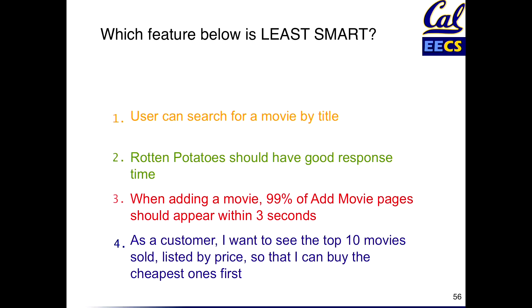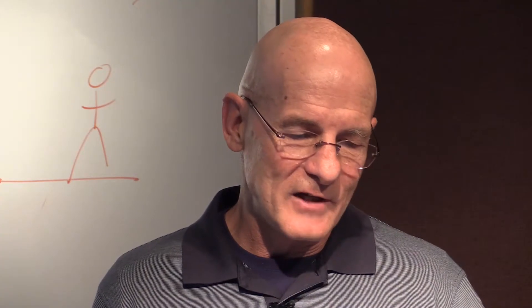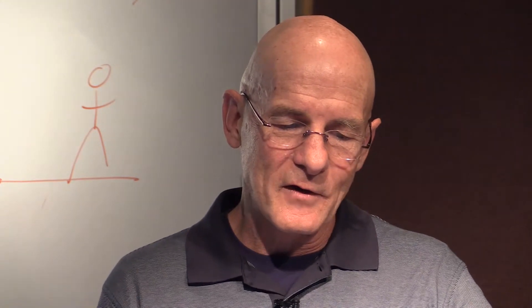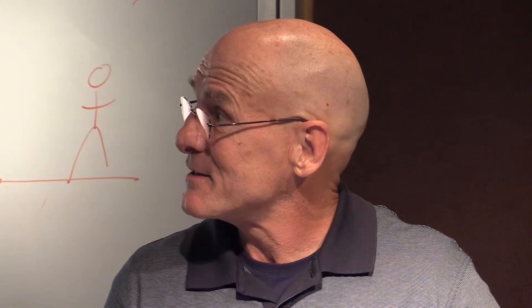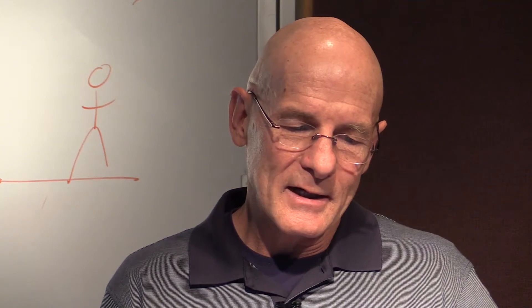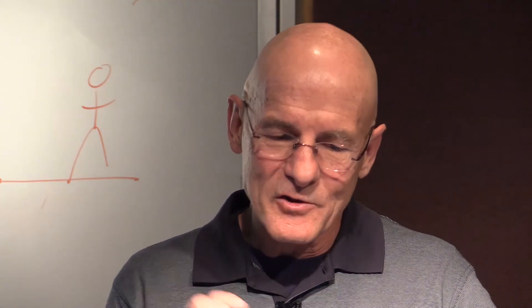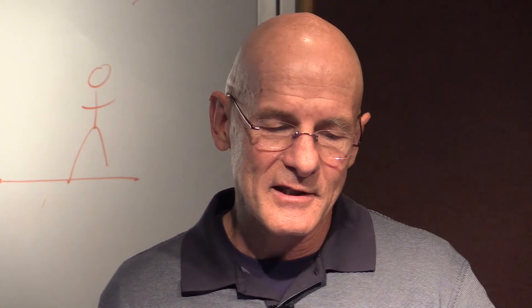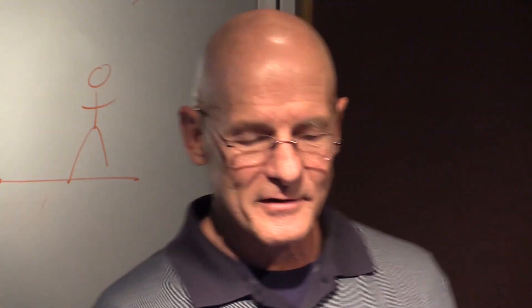Top ten is specific and measurable as well. Hopefully all of these are achievable and you can time-box them. You can figure out the business value by asking the five whys. Search for a movie by title is a little vague, but it's not as vague as 'Rotten Tomatoes having a good response time.'